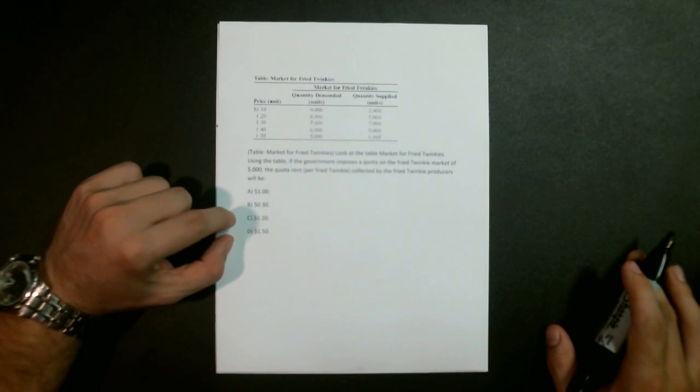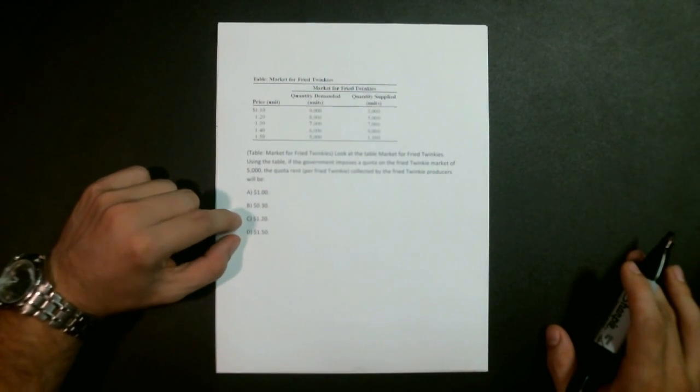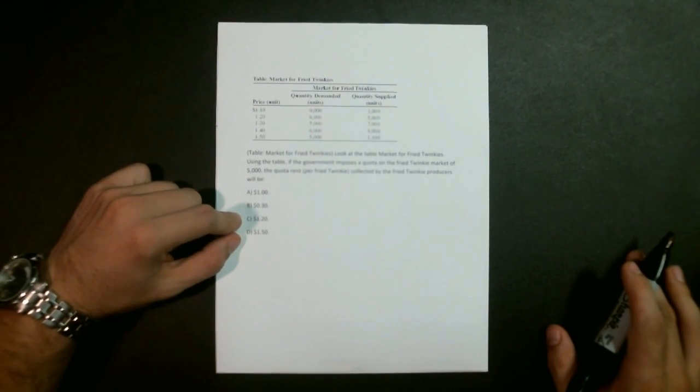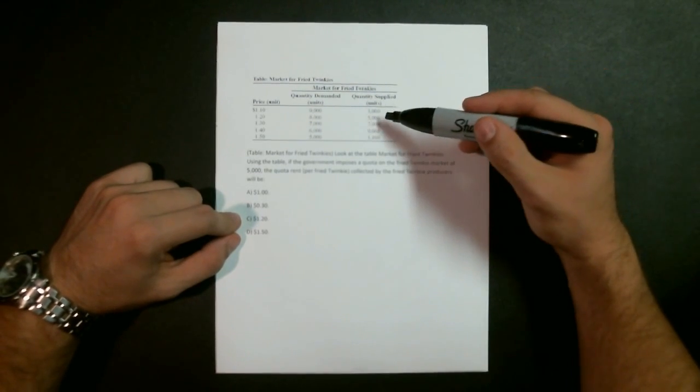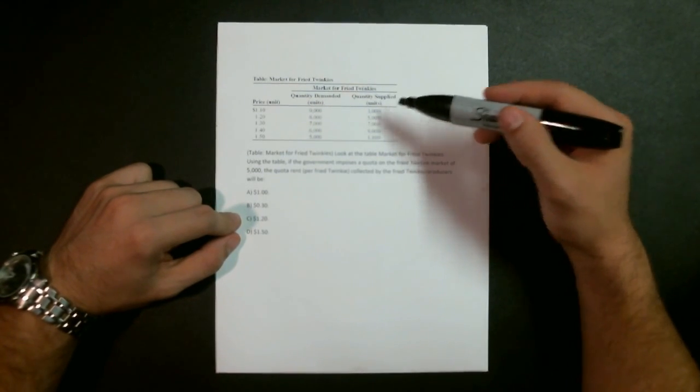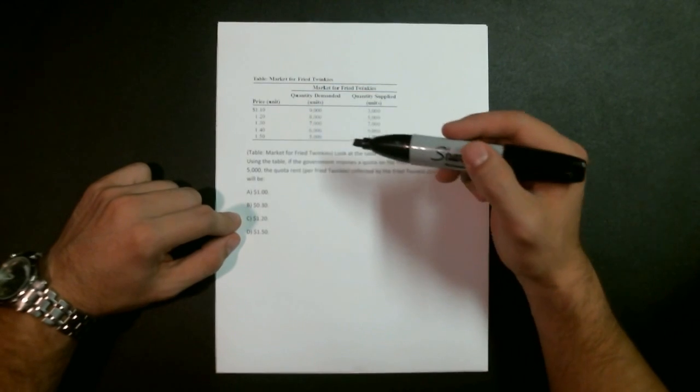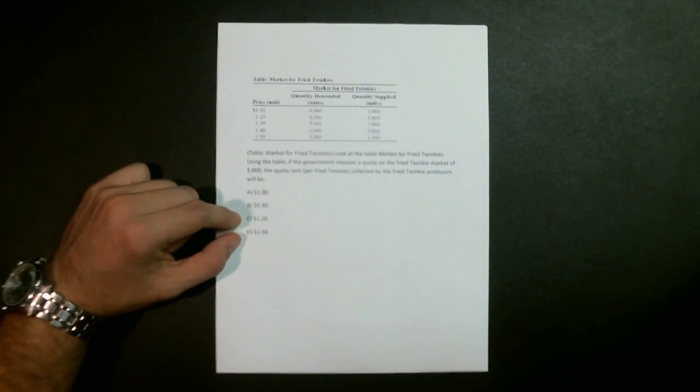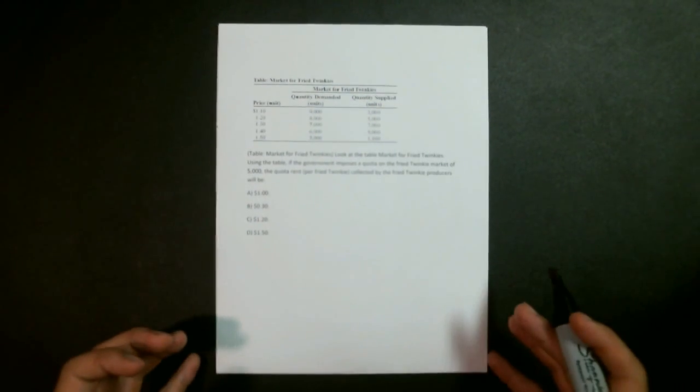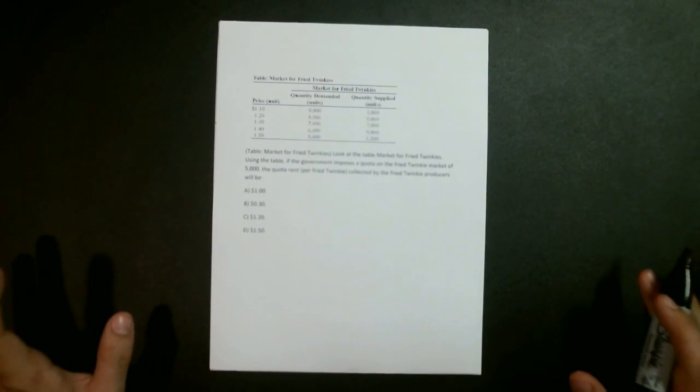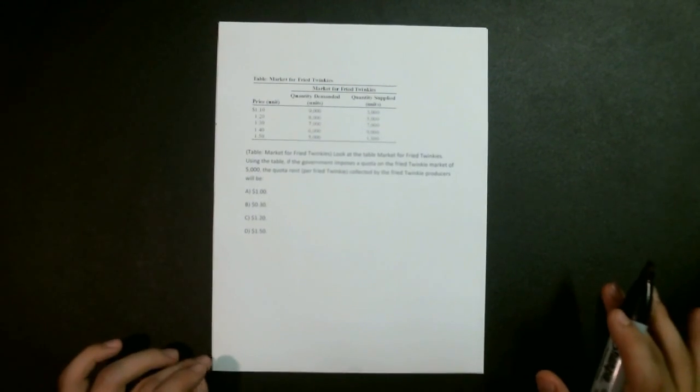Now, it's important to note that both C and D are attractive answers because they're both 5,000 quantity supplied and 5,000 quantity demanded. This problem is not actually that simple and will require a little bit of thought. The best way to approach it is to just draw a graph.